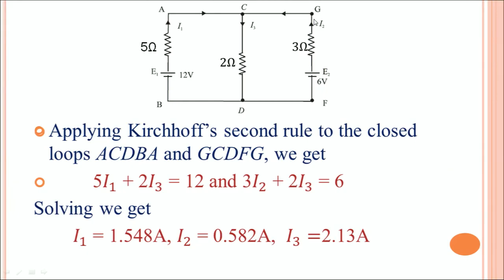For the second loop G, C, D, F, G — anticlockwise: current I3 flows through the 2-ohm resistor in the same direction as the loop, and I2 flows through the 3-ohm resistor also in the same direction. The battery is traversed from negative to positive, so it is positive. The equation becomes: 3·I2 plus 2·I3 equals 6. You now have three equations in terms of I1, I2, and I3, and you can solve by simple algebra to obtain their values.